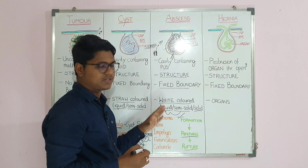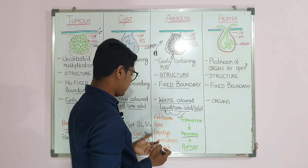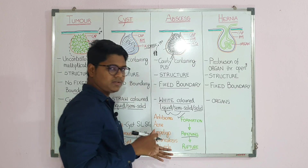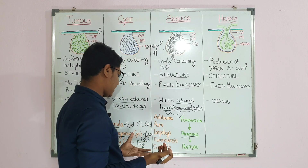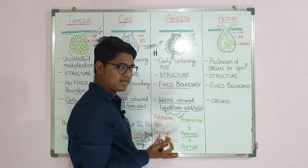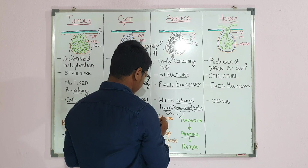The third stage is rupture. After some days the wall becomes so thin it cannot handle the pressure, and it will rupture — there will be drainage of pus. This three-stage process is characteristic of abscess.